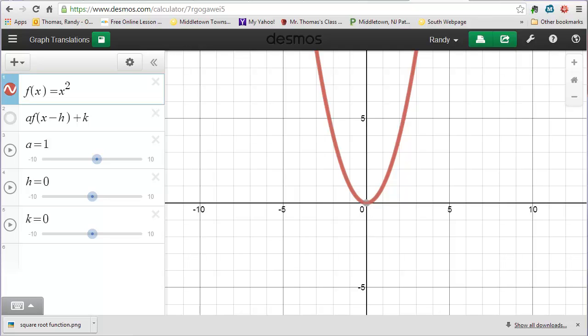When we graphed the quadratic functions earlier this year, we talked about function translations. Function translations are modifications to a base function and based on the way the modifications are done, we can predict what kind of shift or translation the function will take.